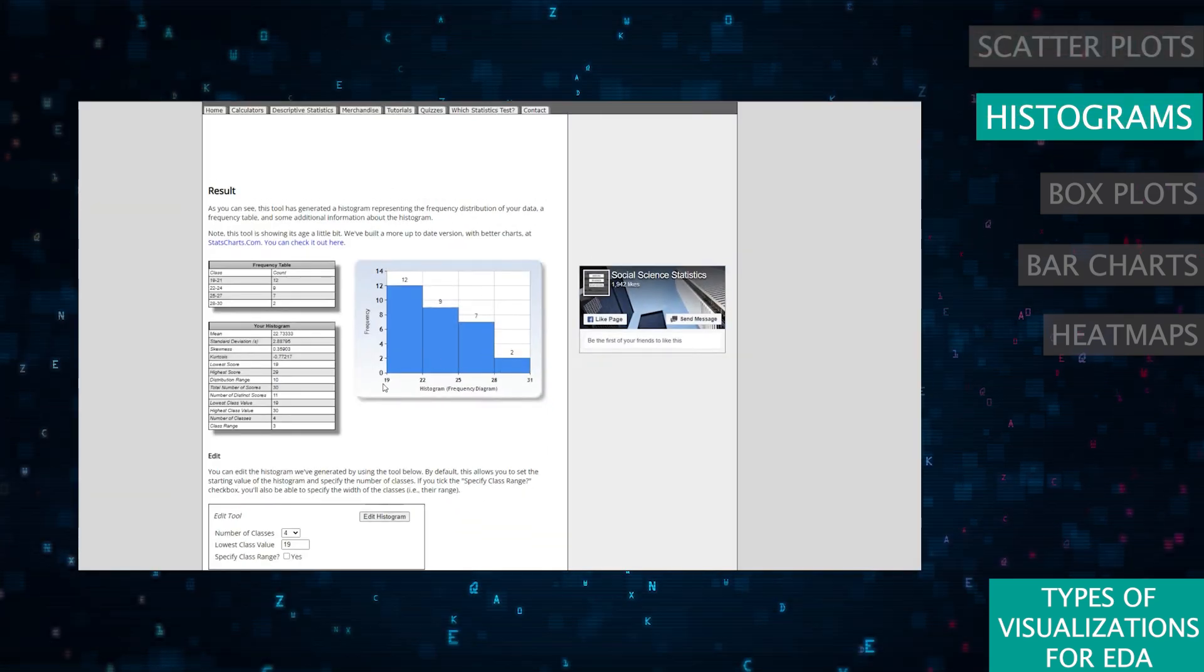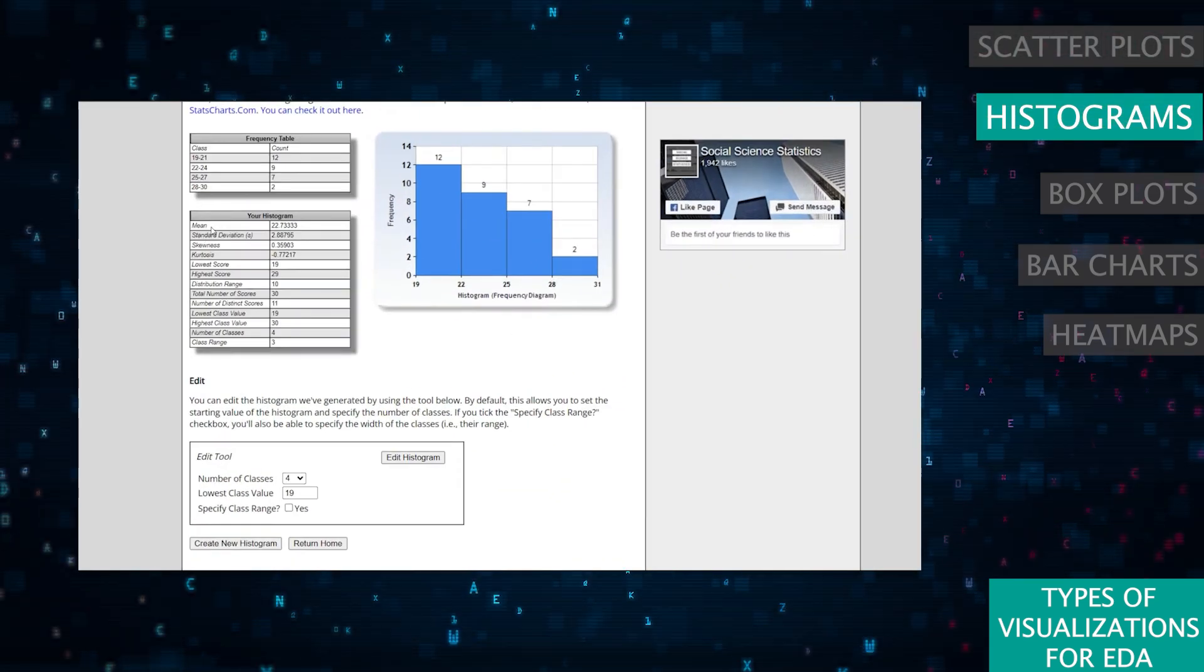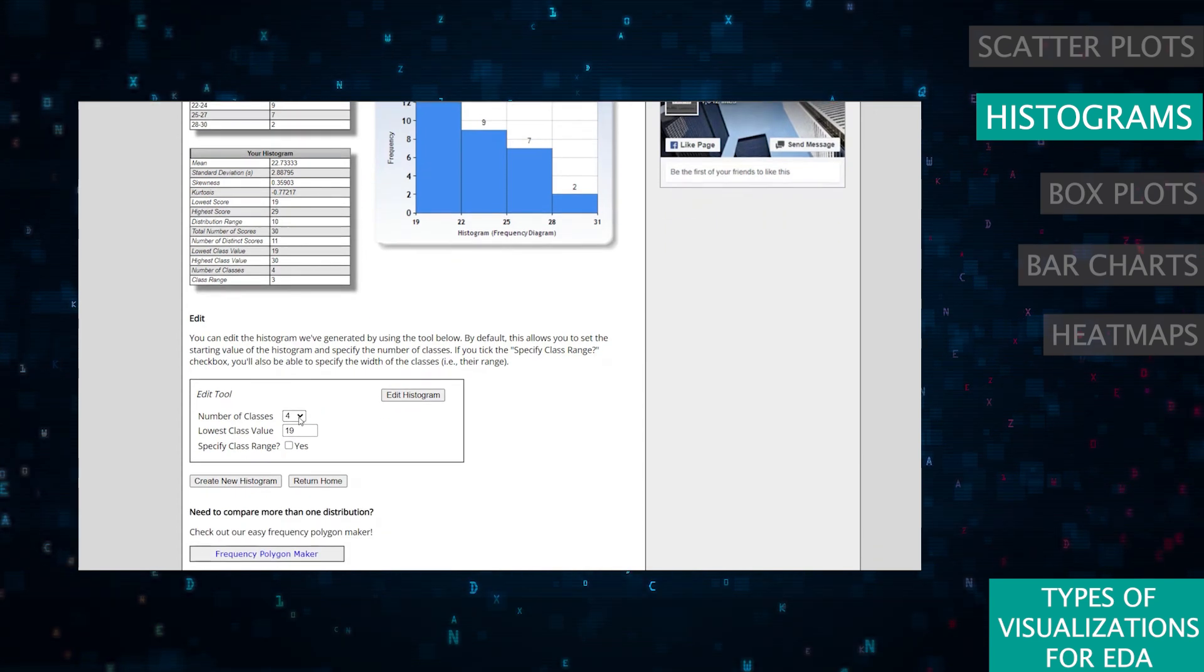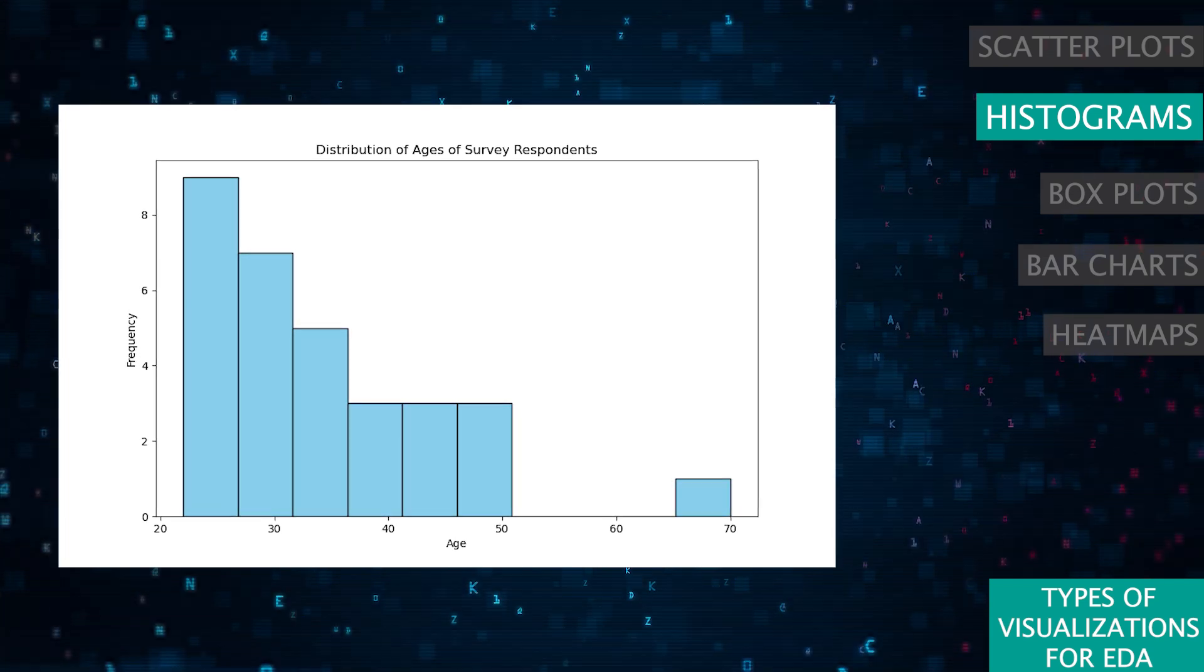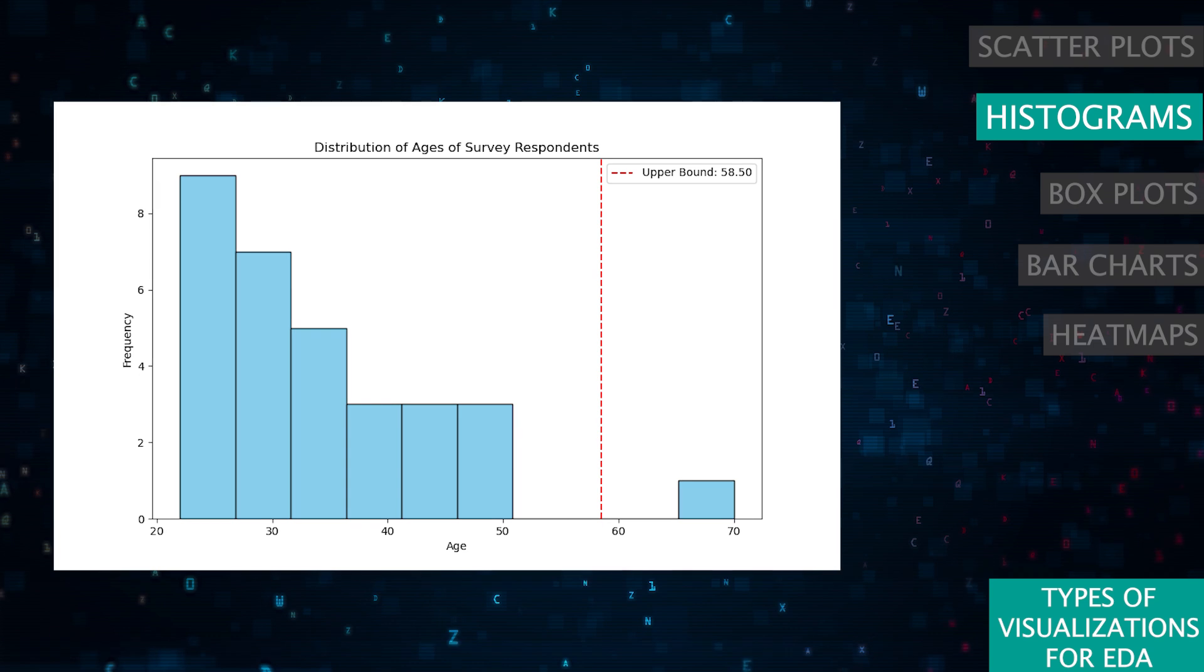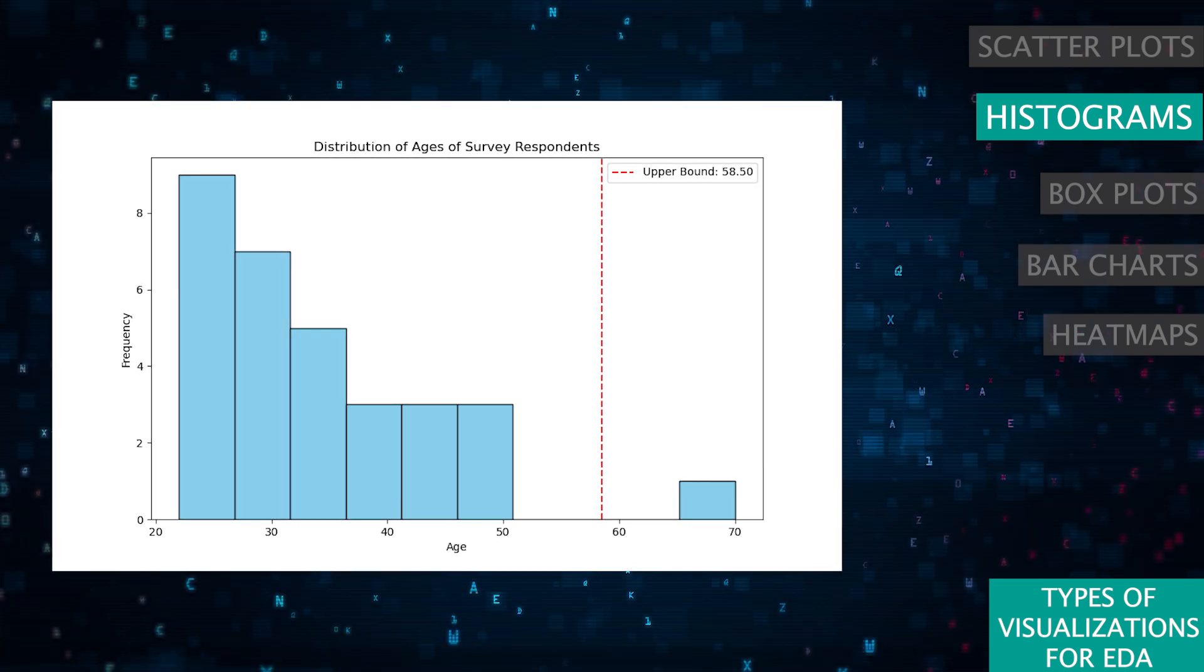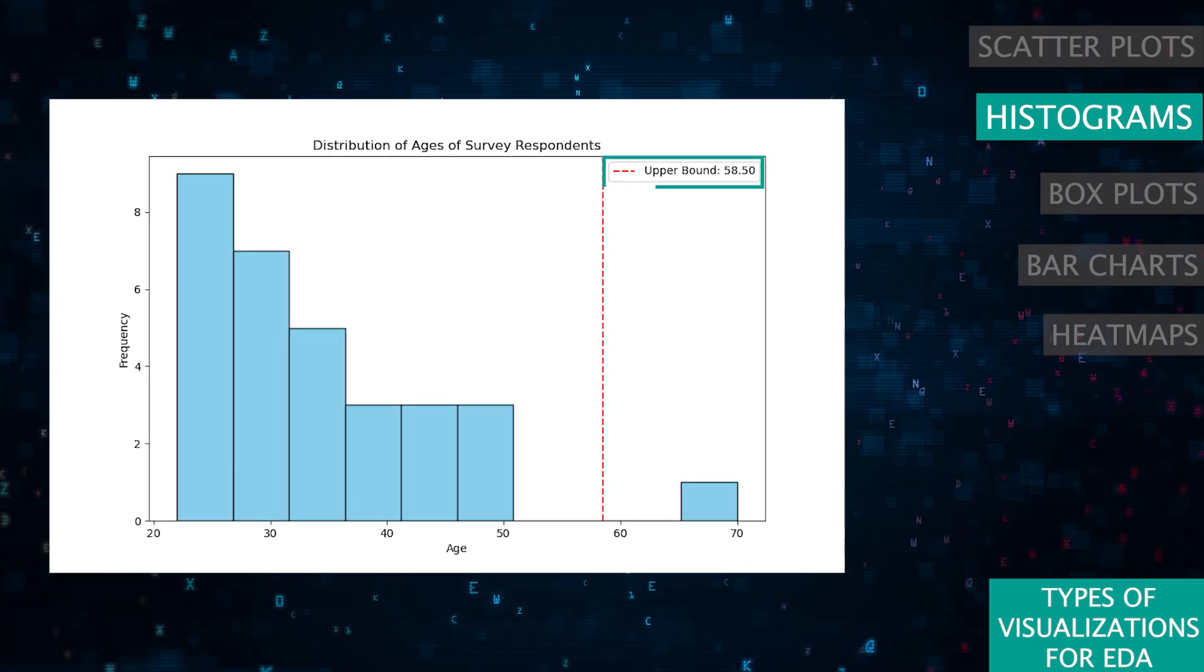Histograms show the distribution of a single variable. They're perfect for understanding the spread and central tendency of your data. For instance, if you're looking at the ages of your survey respondents, a histogram can show you the age distribution. Histograms can be helpful when wanting to see the tails of the distribution, which makes cutting off your data or resegmenting it much easier. In the example, the upper bound is at 58.50.